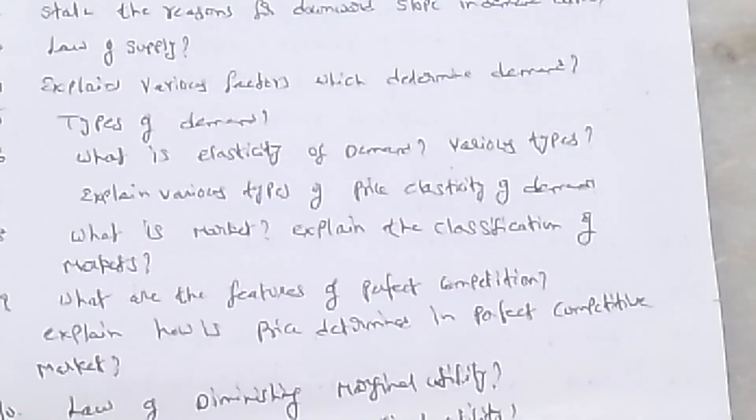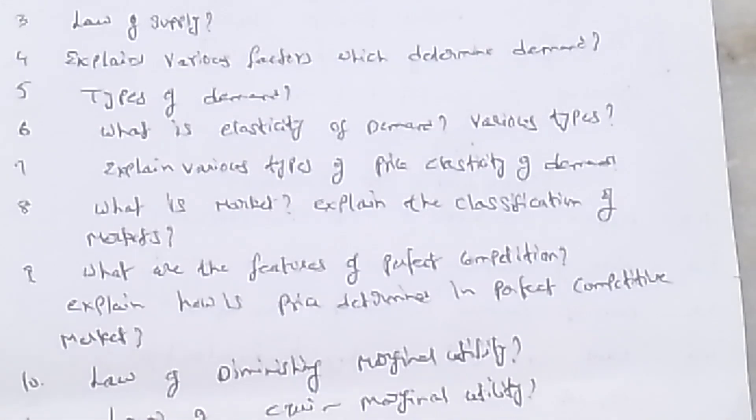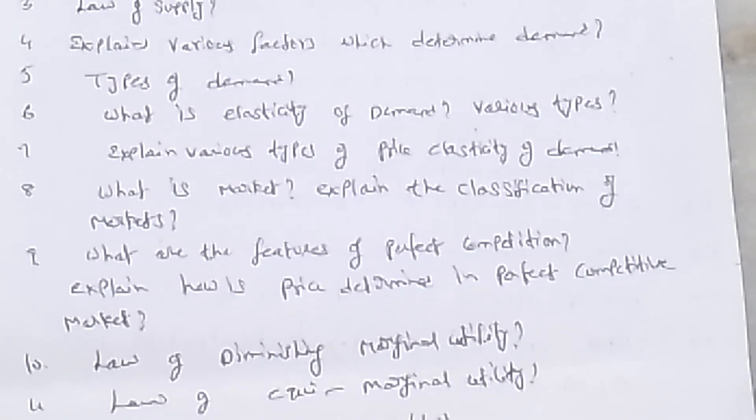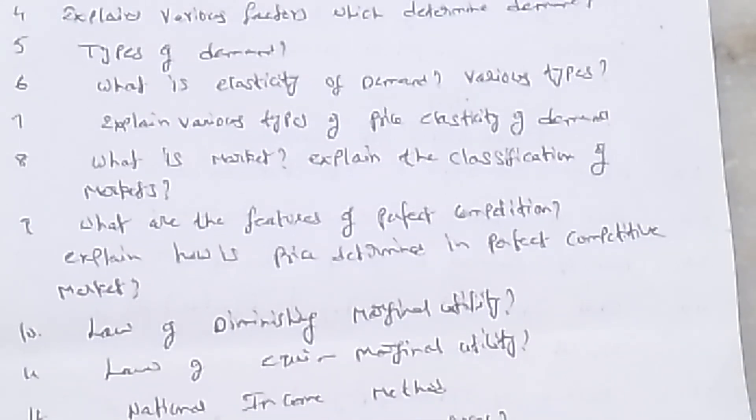What is market? Explain classification of markets. What are the features of perfect competition? Explain how the price is determined under perfect competition. Law of diminishing marginal utility, law of equi-marginal utility.